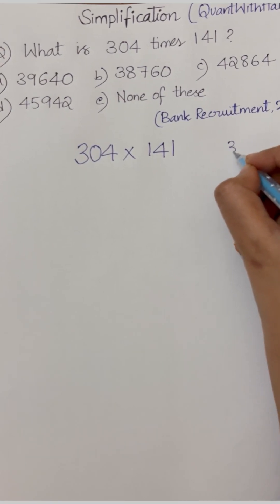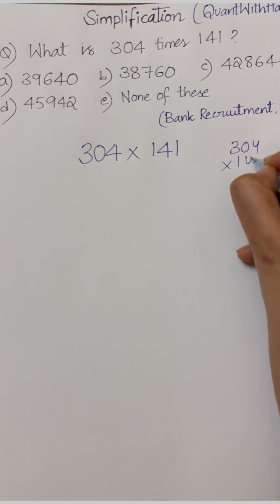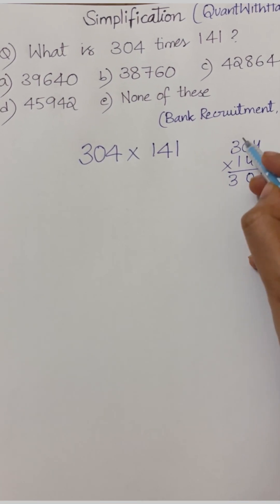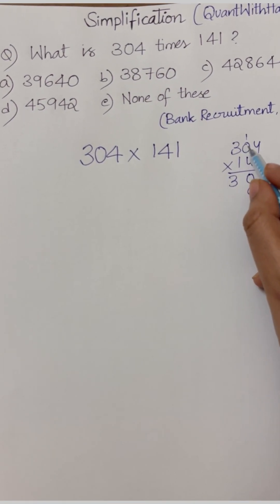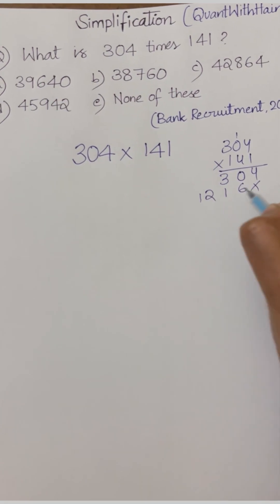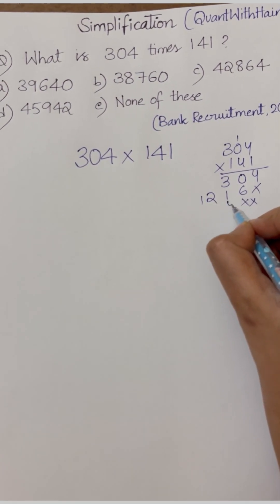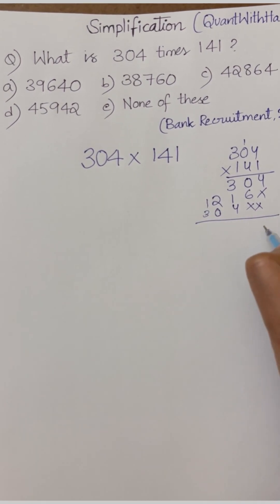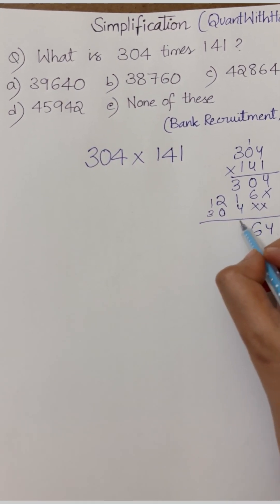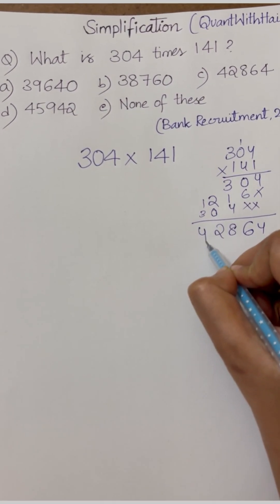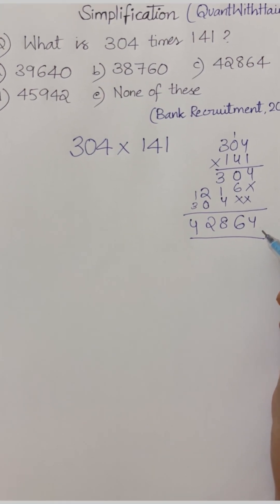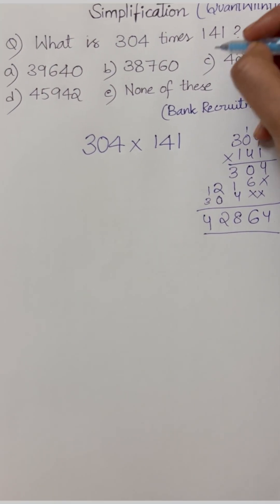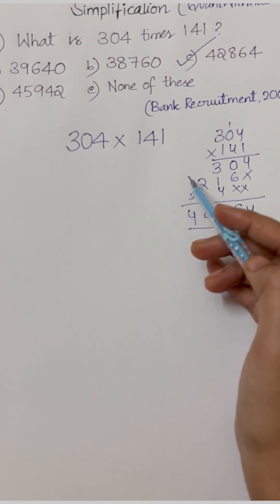Generally the multiplication method will go like this: 4 x 4 = 16, 4 x 0 = 0, 4 x 1 = 4, 4 x 3 = 12 — working through all the digits — giving us 6, 7, 8, 2, 4; that is nothing but option C.